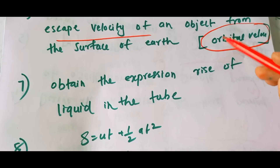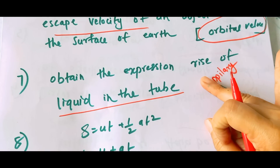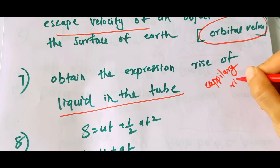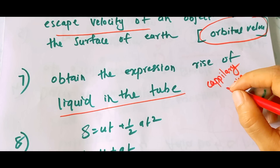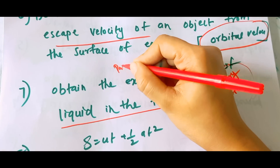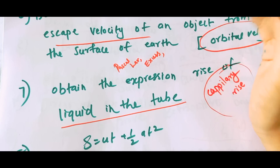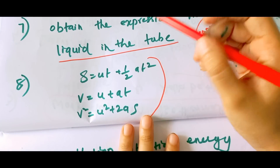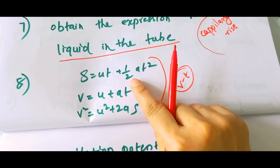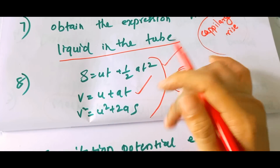Obtain an expression for the rise of liquid in a tube — that is, capillary rise. We are going to explain terminal velocity, excess pressure inside a liquid drop, and Pascal's law. In the velocity-time graph, you can derive s = ut + ½at². You can also see v = u + at and v² = u² + 2as — these can be seen in the three-mark questions.